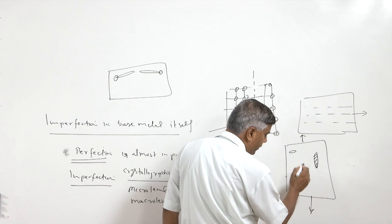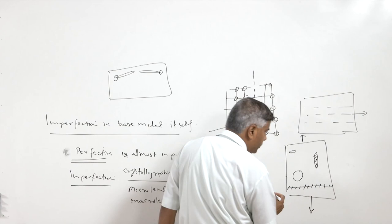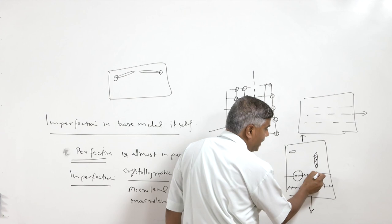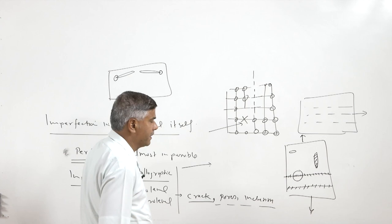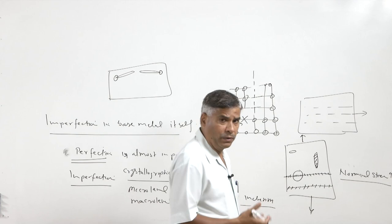If we consider tensile loading and look at a cross section, where the entire cross section is sound the stresses will be less, compared to a section where we have a large void. The void region will not be carrying the load, so the load-resisting cross-sectional area is actually reduced when we have macro-level imperfections. Even the nominal stresses are increased primarily due to this reduction in load-carrying cross-sectional area.